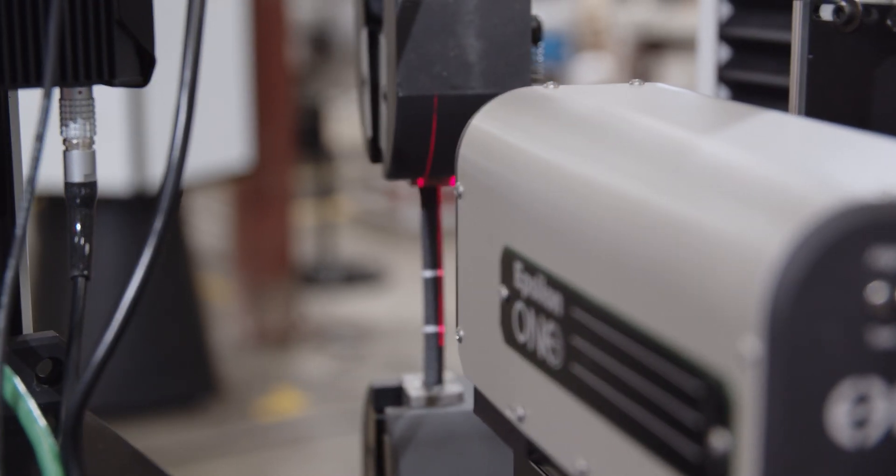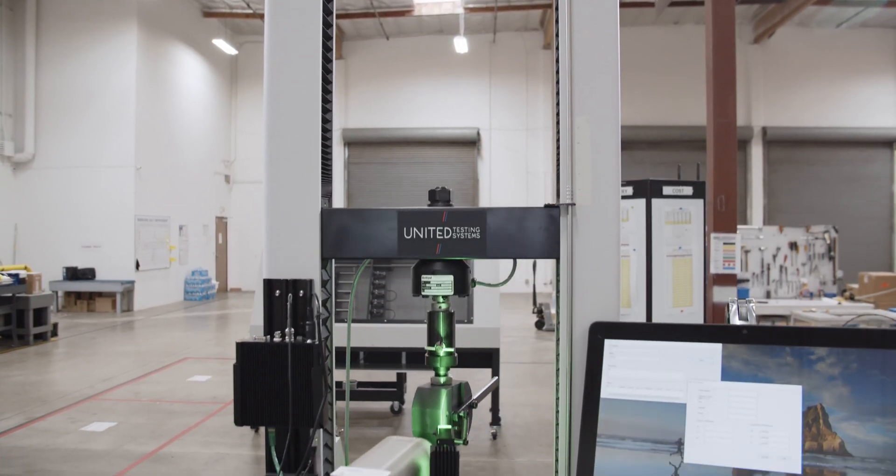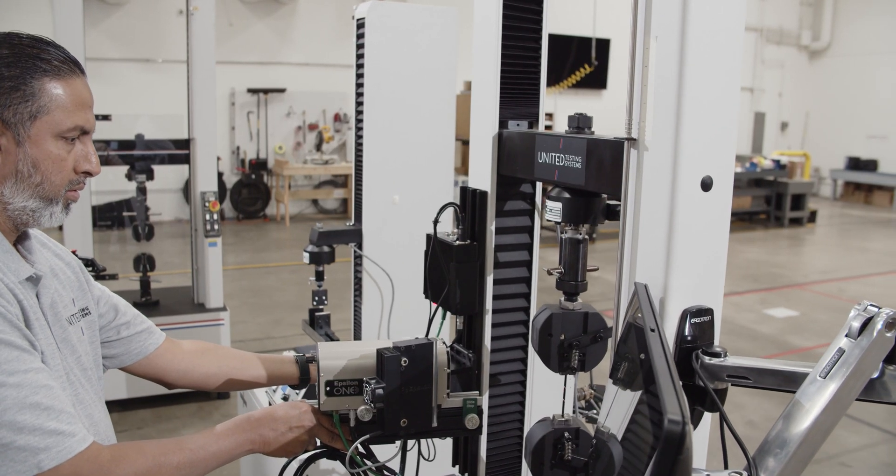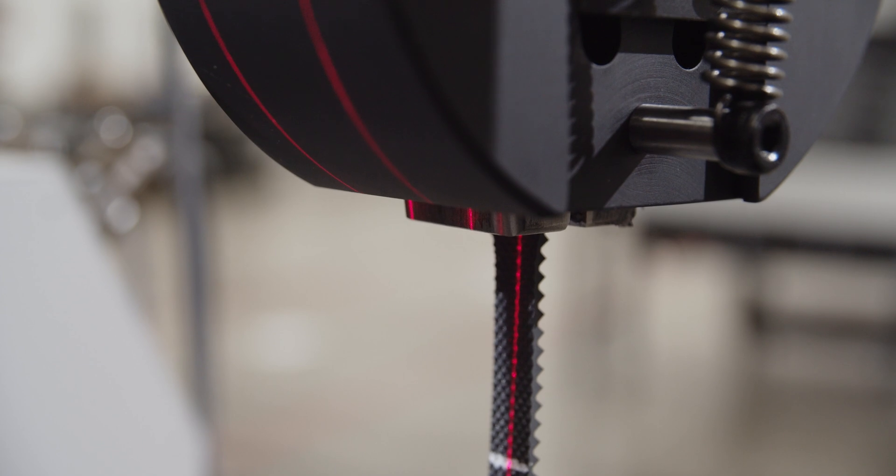When mounted to a United universal test machine, the EP1 system will allow customers to measure axial strain with industry-leading resolution, accuracy, and speed.